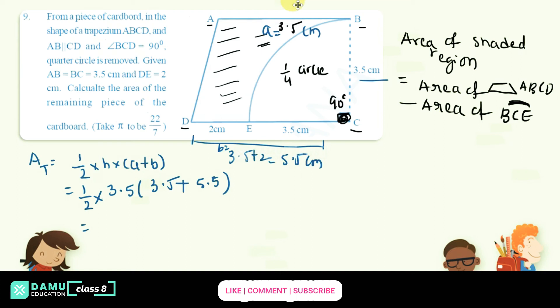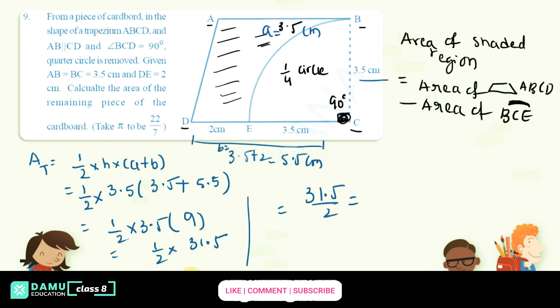So: one half into 3.5 into (3.5 + 5.5) = one half into 3.5 into 9 = 9 into 3.5 = 31.5, then 31.5 divided by 2 gives 15.75. So the area of the trapezium is 15.75 centimeters square.